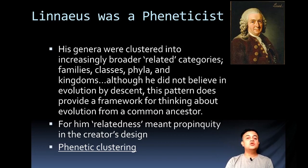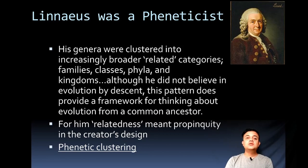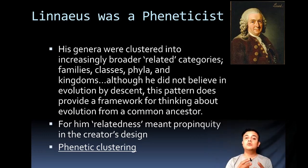Linnaeus was not aware of Darwin's developments — Darwin wasn't even born at the time of Linnaeus. Yet subconsciously his classification system perfectly reflects how organisms actually evolved, because gross morphological similarities are to a certain extent explained by evolution. For him, relatedness meant propinquity in the creator's design — the prevailing theory then was special creation or intelligent design. Phenetic clustering simply groups taxa into increasingly higher hierarchical levels by looking at gross morphological similarity.